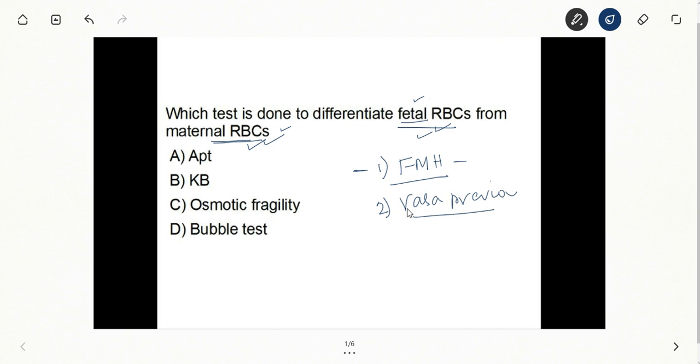Which test you will do in this condition? Now vasa previa, before you answer this question, let's discuss vasa previa in brief. This is a condition where fetal blood vessels lie just over the os, so that when membranes rupture this is what bleeds. And in such conditions the fetus exsanguinates very fast. So you need a test which is very fast.